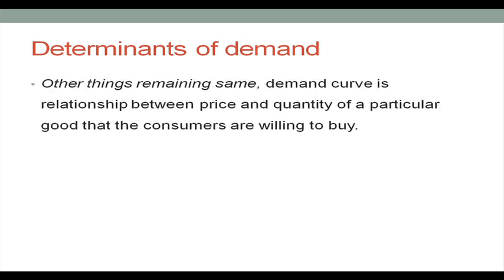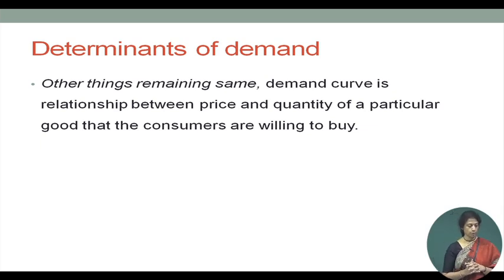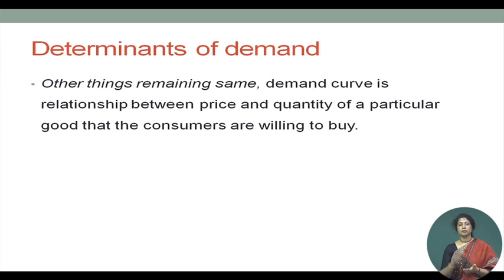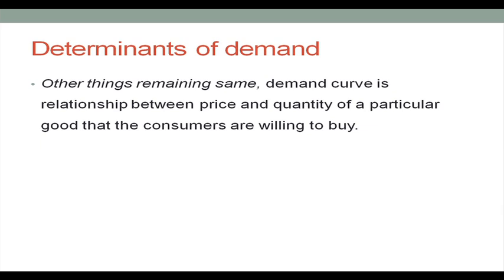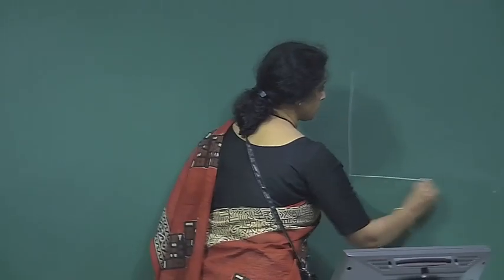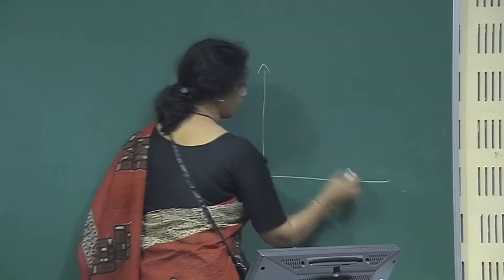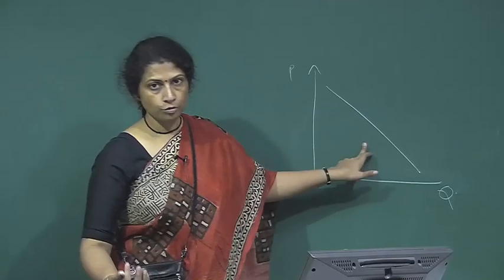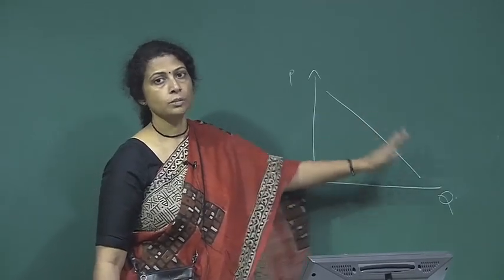What are the determinants of demand? Other things remaining same, the demand curve is the relationship between price and quantity of a particular good that consumers are willing to buy. The phrase 'other things remaining same' is italicized because there are many factors which influence demand. The demand curve I drew for Tom shows the relationship between price and quantity of ice creams — this could be the demand curve for an individual or for the market of ice creams.